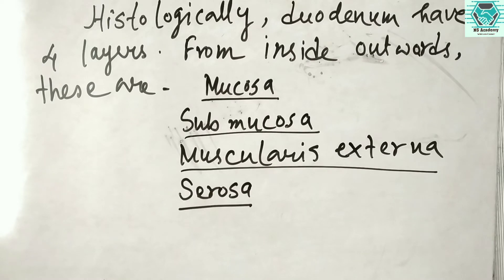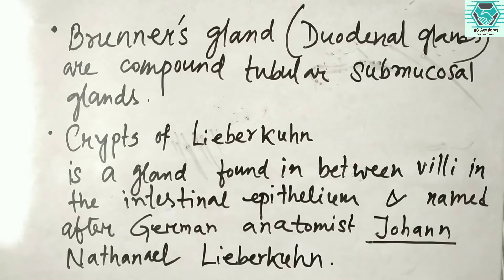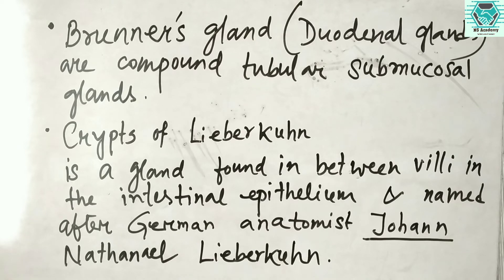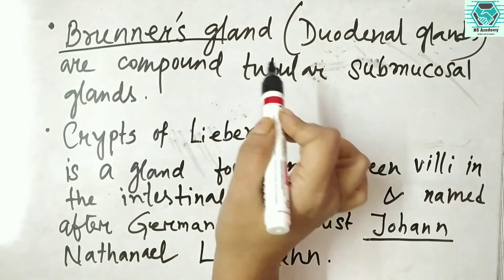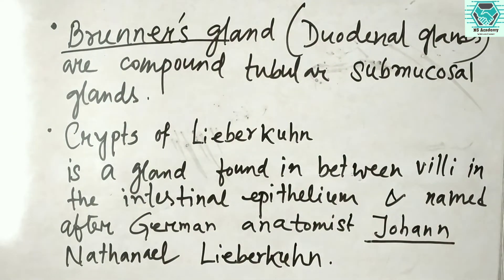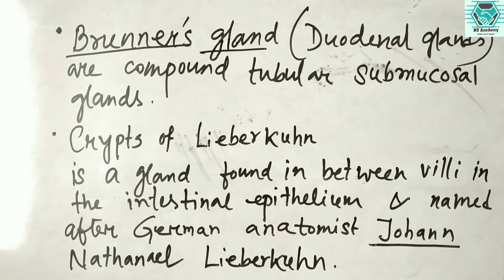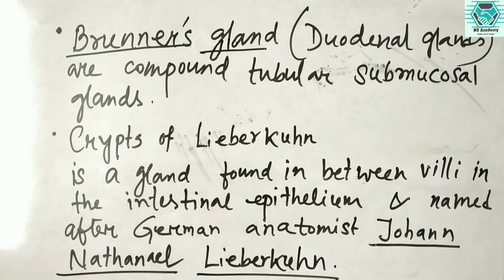The Brunner's glands are alkaline and help to neutralize the acid chyme produced by the stomach. The most important gland in the duodenum is the Brunner's gland, which are compound tubular submucosal glands. Also found between the villi in the intestinal epithelium are the crypts of Lieberkühn, named after the German anatomist Johann Nathan Lieberkühn.